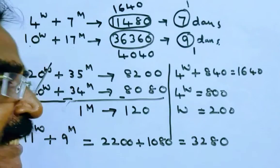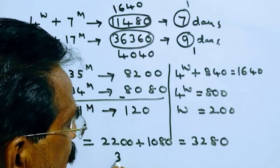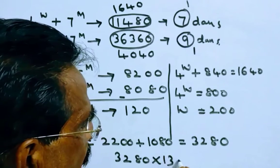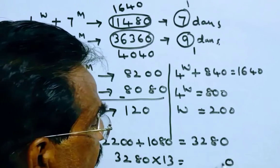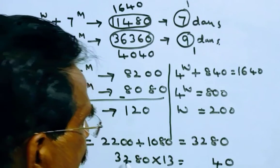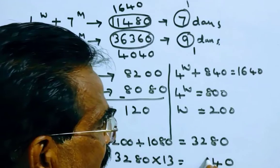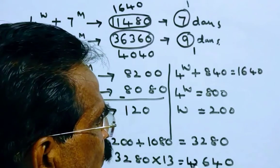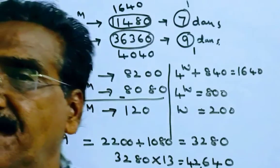We want in 13 days, so 3,280 into 13. 13 times 0 is 0, 13 times 8 is 104, 13 times 2 is 26 plus 10 is 36, 13 times 3 is 39 plus 3 is 42. So the answer is 42,640. Friends, thank you.